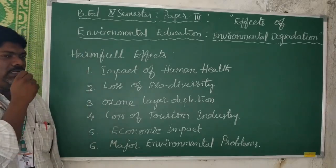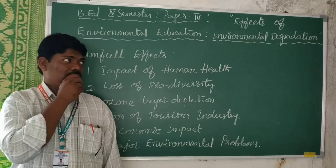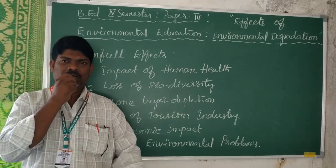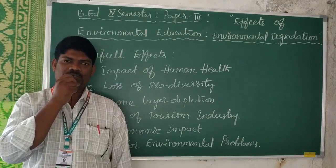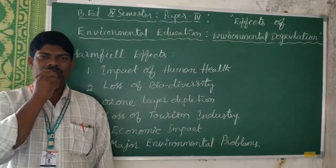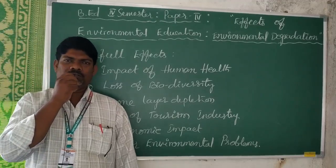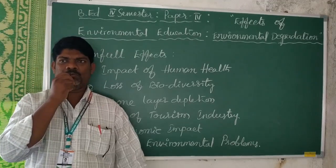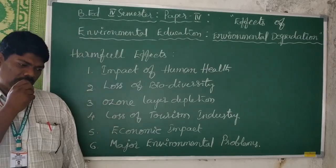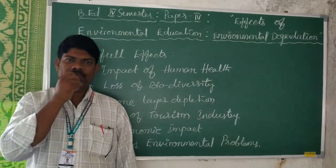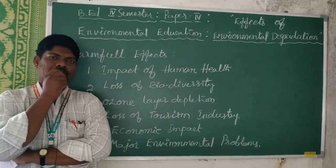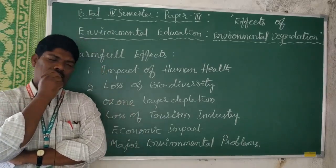The first effect is the impact on human health. When environmental degradation takes place in the surroundings of a country or an area, it causes harmful effects on human health. The people living in those surrounding areas will suffer from different types of diseases. For example, asbestos factories create the harmful effect of chronic bronchitis in human beings.